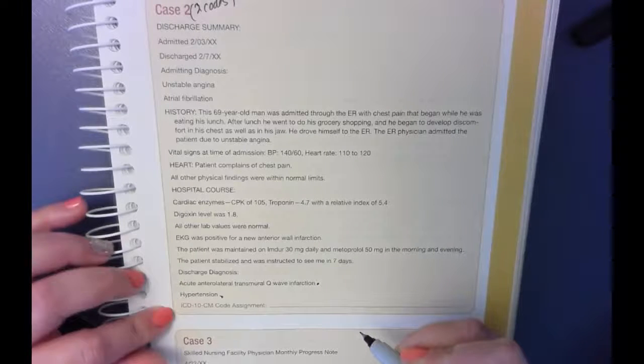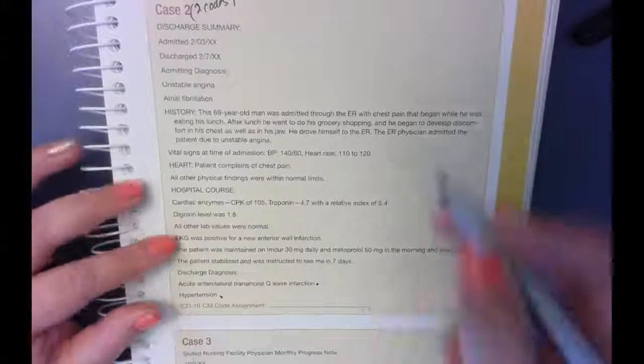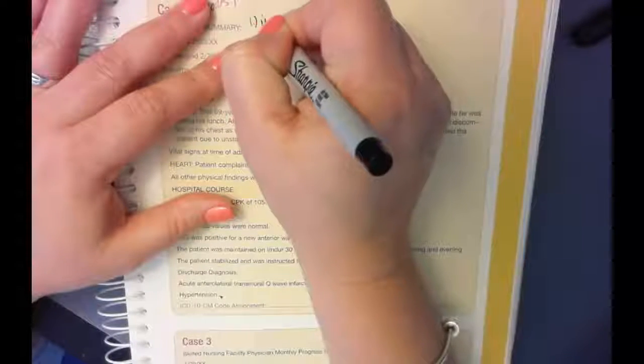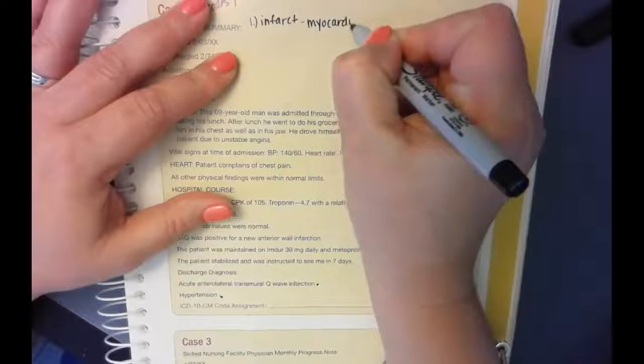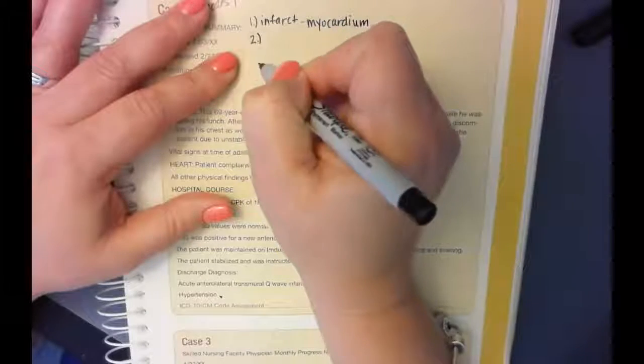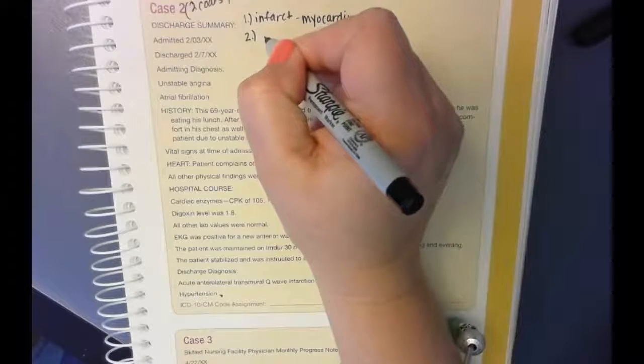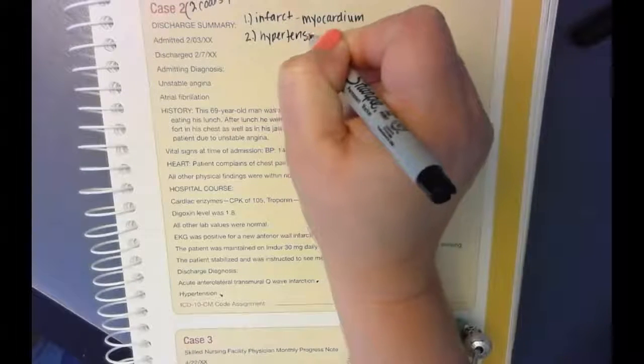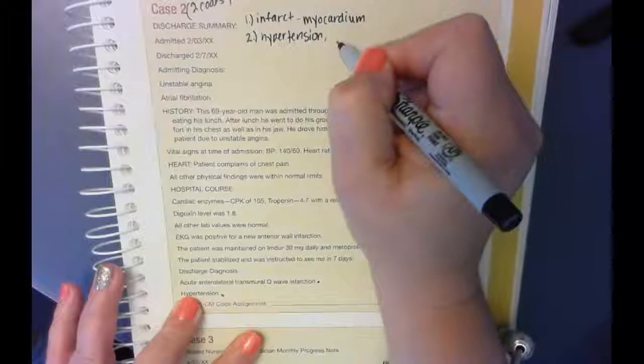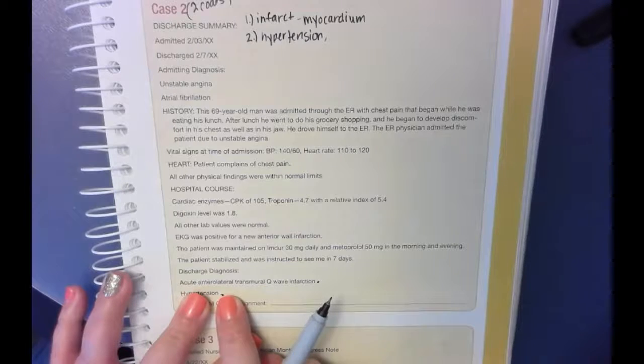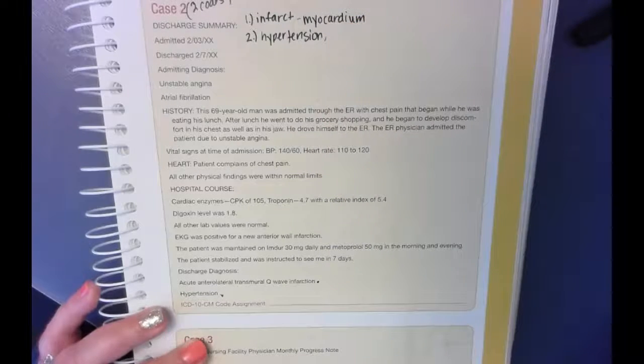And so we are going to look up for the first one, infarct. So I'm going to write these up here. And then myocardium. And for the second code, let's look up hypertension. We talked about this in class today, it's going to be that I-10 code. It's not specified here, but when you look it up in your tabular list there's a whole bunch of includes notes there. So you're going to want to look that up but I'm pretty sure this is going to end up being I-10. So that's it for case two.